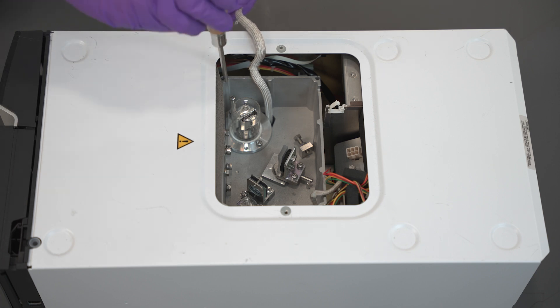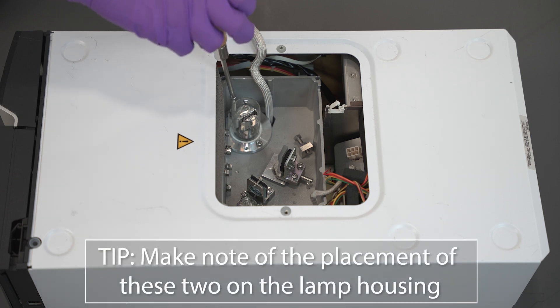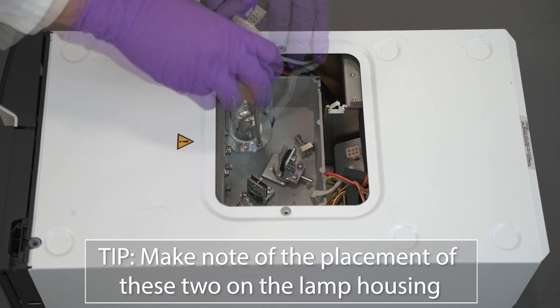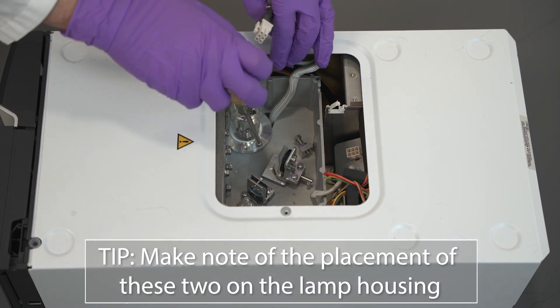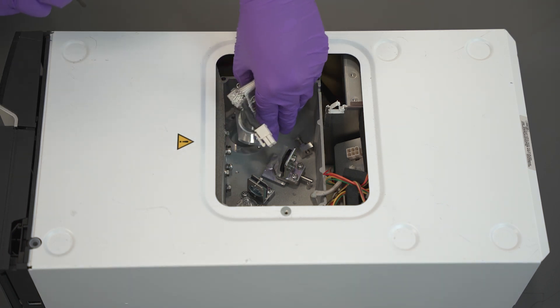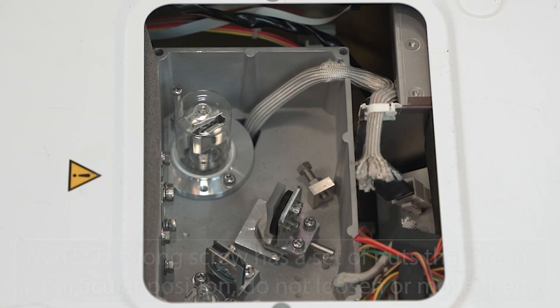Loosen the two deuterium lamp mounting screws with the Phillips head screwdriver until the deuterium lamp can be removed. Make note of the placement of these two screws on the lamp housing. Remove the two screws and set aside for the new lamp. The long screw has a set of nuts that are in a particular position. Do not loosen or remove them.